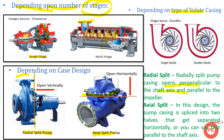Depending upon type of volute casing, we have single volute and double volute casing. Double volute casings are preferred where high head requirements exist, while single volute casings are used for normal applications. In a single volute there is no internal chamber, while in a double volute you can see two chambers separated by an internal divider.